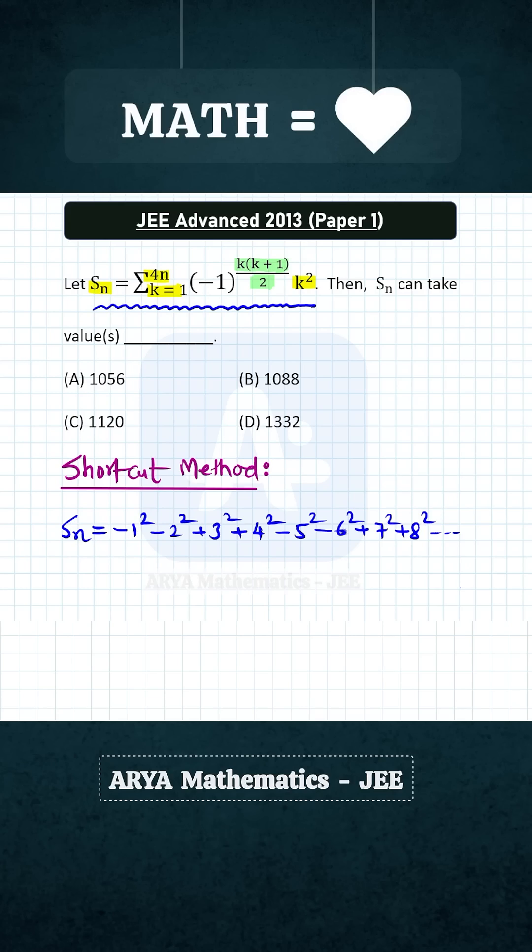And now after this, what we can do is we can combine the alternate terms. We can combine -1² and +3², so these two will write as 3² - 1². And basically, the idea is that if we use a+b into a-b, then a-b we can take common from all of these terms. So we will combine these two terms, -2² + 4², so we will write this as 4² - 2². Next term will be 7² - 5². And after this, we will get 8² - 6², and so on.